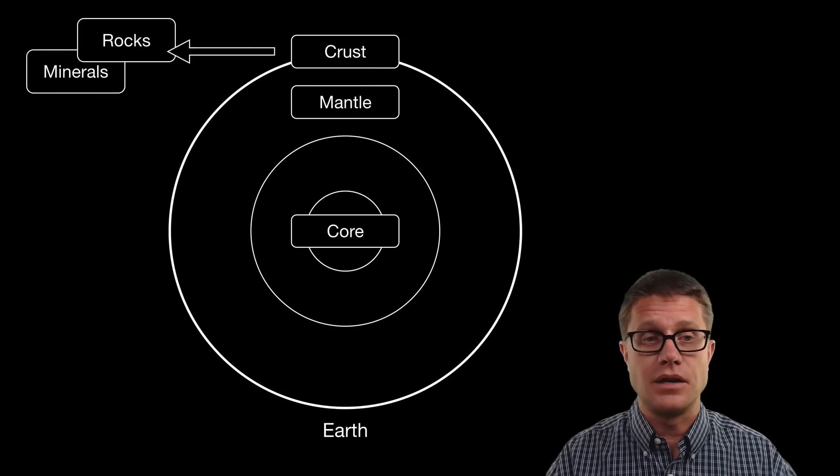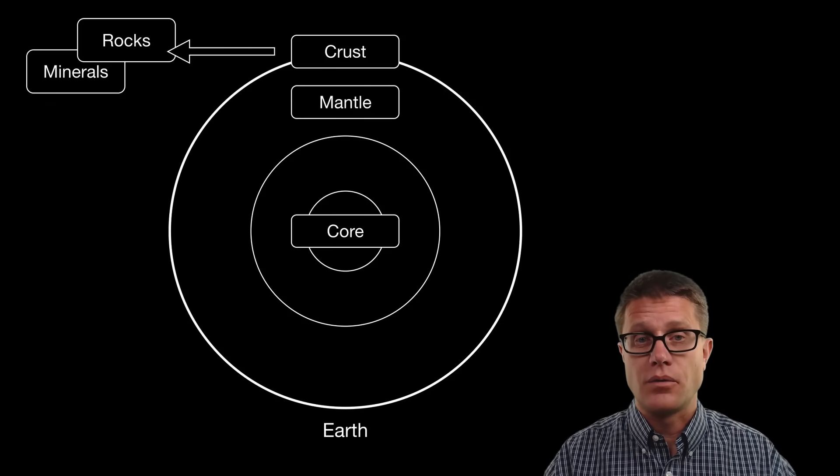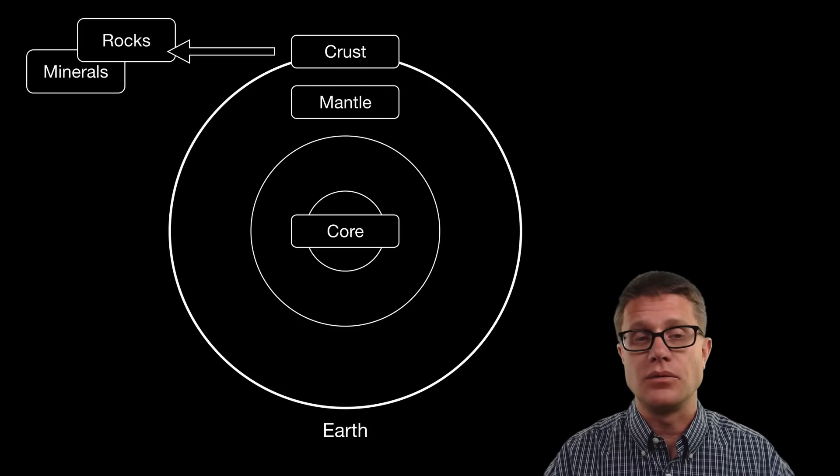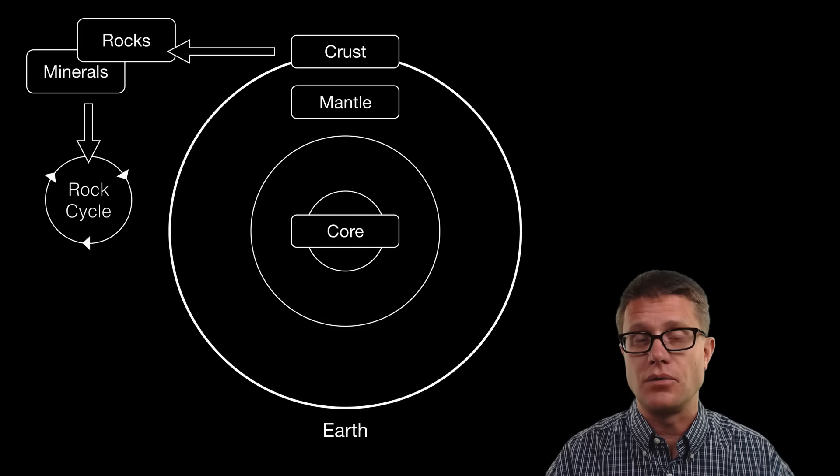And we know this, that the crust is made up of rocks and minerals. Rocks are made of minerals, which in turn are made of molecules and atoms. And they are constantly being reshaped. And we can measure that through the rock cycle.